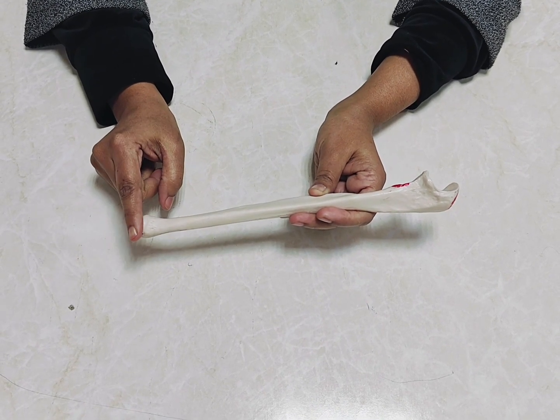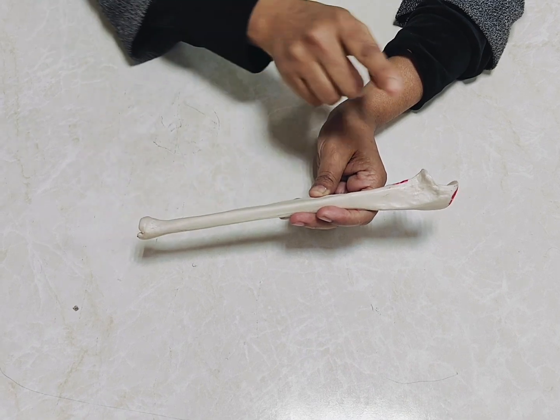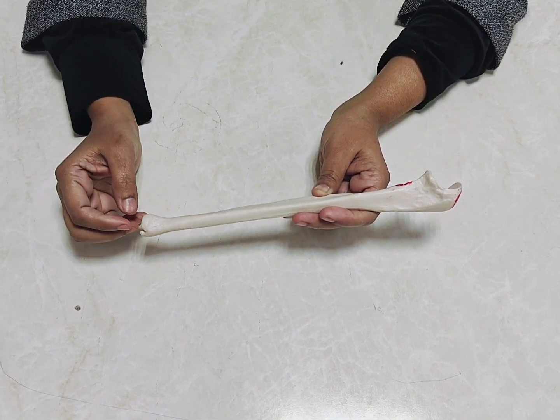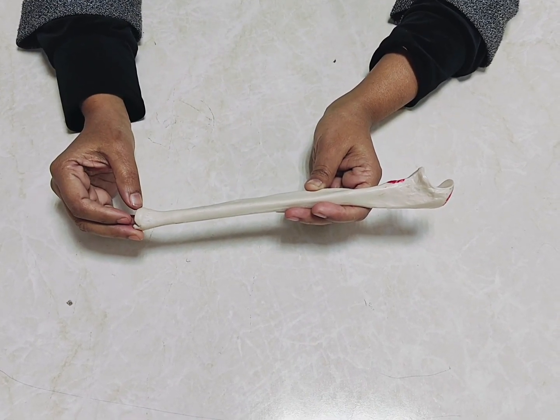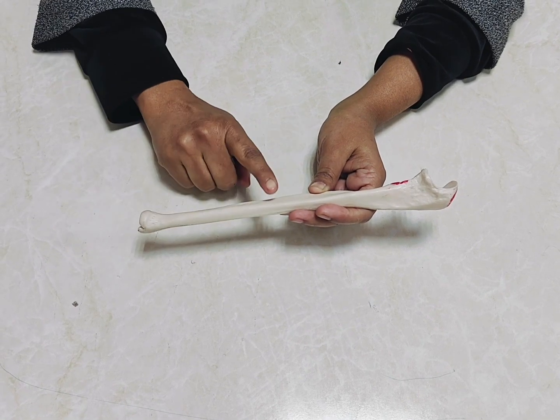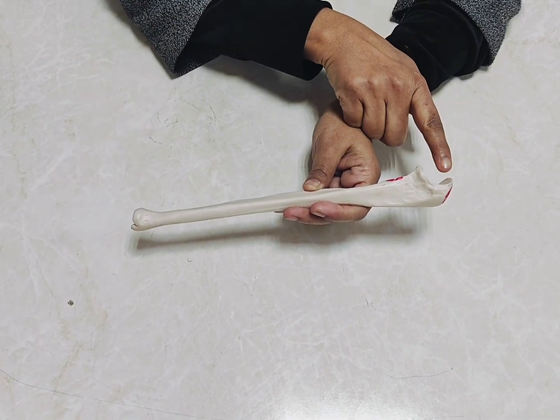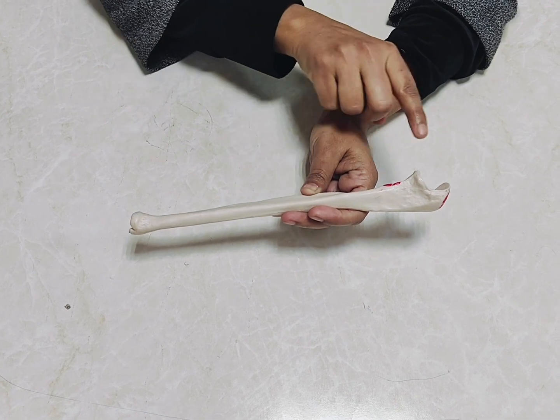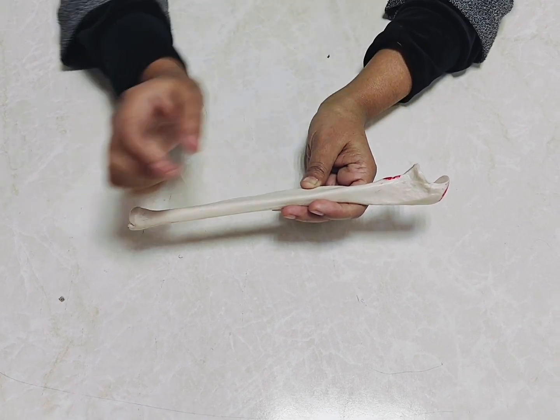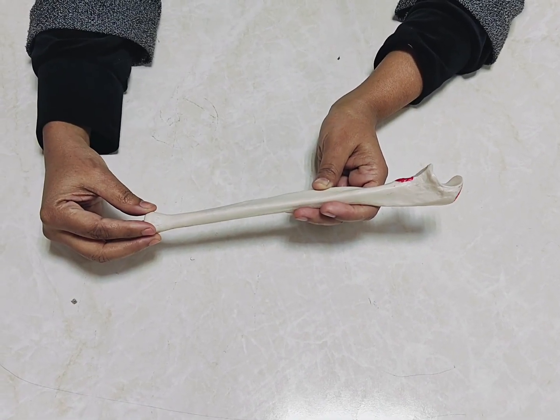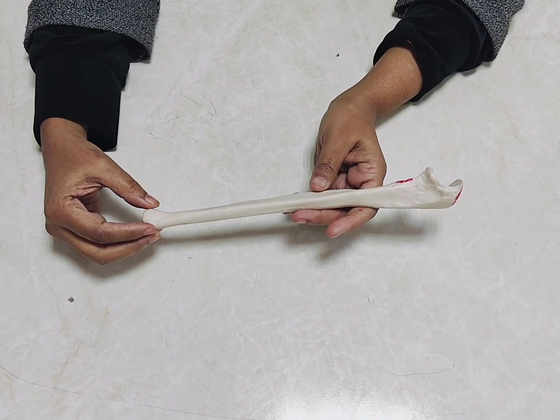In case of upper end, it will appear at the age of nine years. The lower end will unite with the shaft at the age of 20 years, and the upper end will unite with the diaphysis at the age of 18 years. So the growing end will be the lower end of ulna. Thank you.